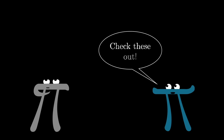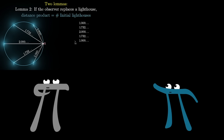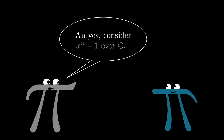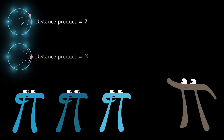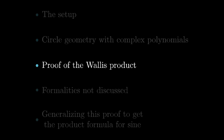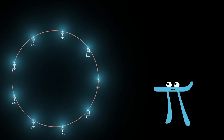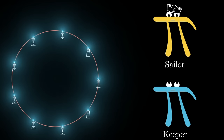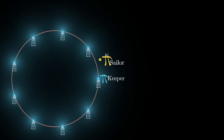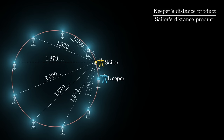Proving geometric facts with complex polynomials like this is pretty standard in math, and with both facts in our back pocket, let's see how to use them to understand the product we're interested in and how it relates to pi. Take the setup with n lighthouses evenly spaced around a unit circle and imagine two separate observers: the keeper and the sailor. Put the keeper directly on one of the lighthouses and put the sailor halfway between that point and the next lighthouse. We'll look at the distance product for the keeper divided by the distance product for the sailor, computed in two separate ways.